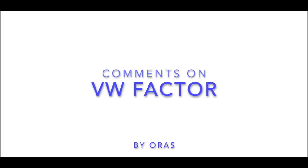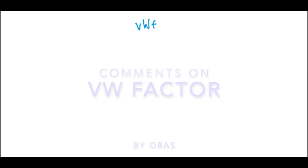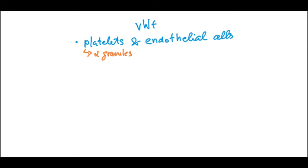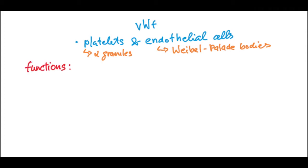Von Willebrand's factor is produced by platelets and also endothelial cells. In platelets it is stored in the alpha granules, along with fibrinogen and factor five. In endothelial cells it is stored in Weibel-Palade bodies.